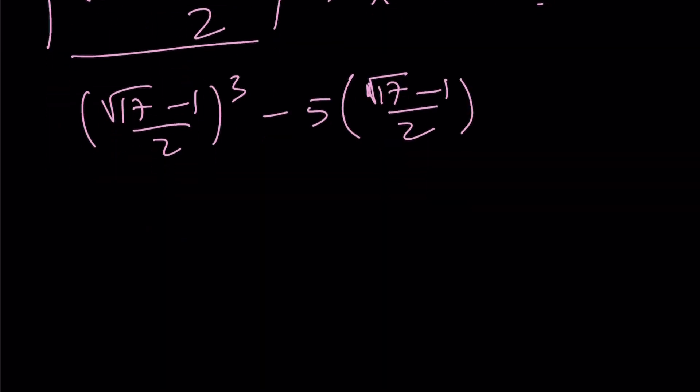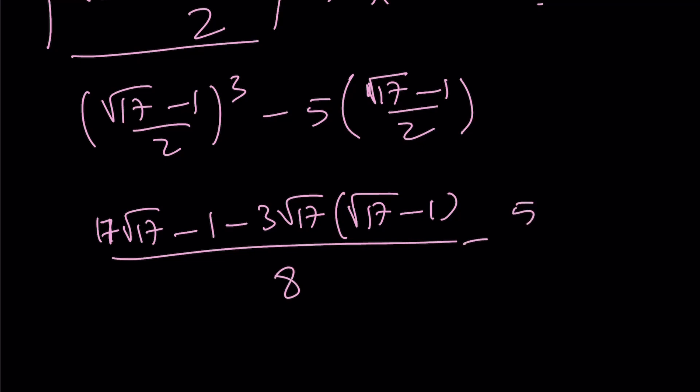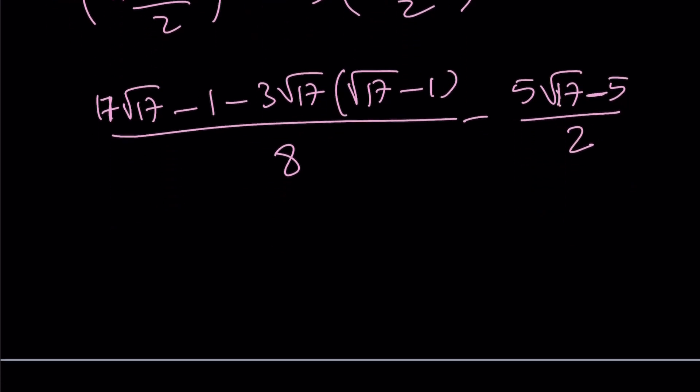To cube it, I'm going to use a minus b quantity cubed, which is a cubed minus b cubed, and then minus 3ab times a minus b. That's usually an identity that I use, divided by 8. And this is just going to be minus 5 root 17 minus 5. I haven't distributed negative yet, so it's still minus sign here. But it's going to be turning into a plus sign.